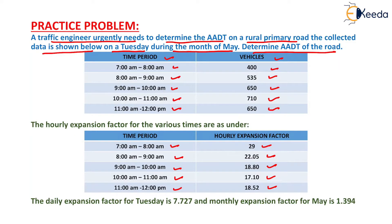The daily expansion factor for Tuesday is 7.727, and the monthly expansion factor for May is 1.394.